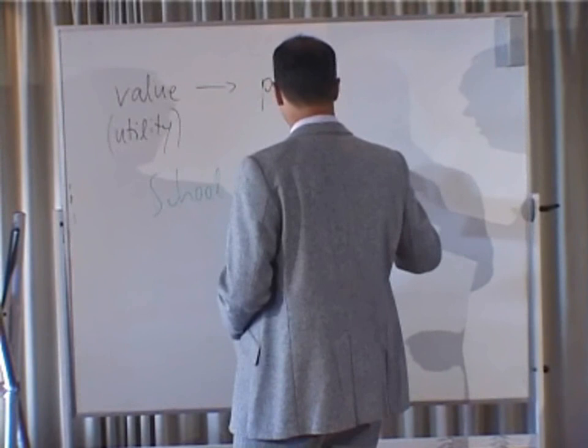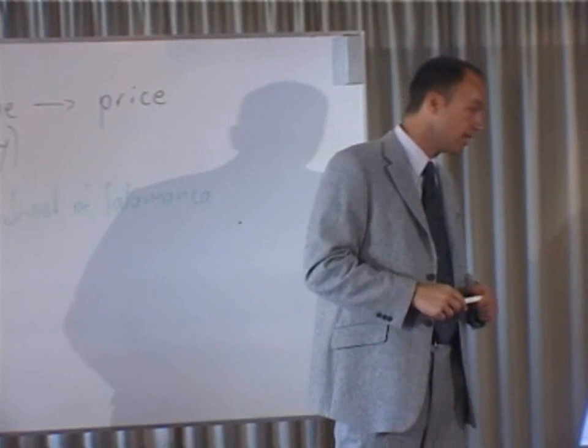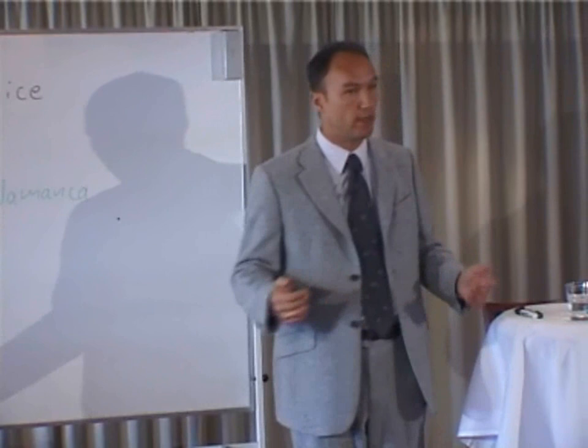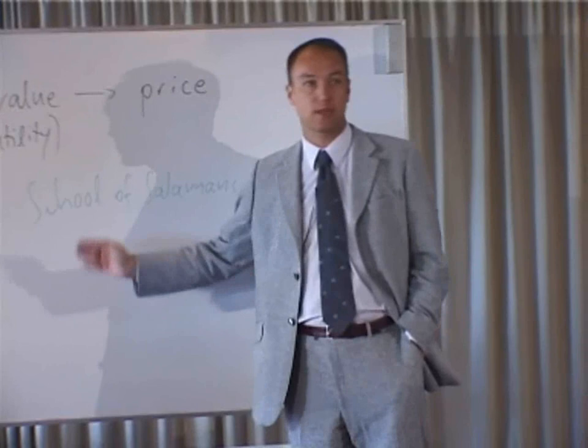Some writers of the School of Salamanca actually identified the principle of marginal valuation, anticipating the marginalist revolution that set in during the 1870s. The reason a revolution was necessary was because there was no continuity from the School of Salamanca down to Carl Menger, Jevons, and Walras in 1870.